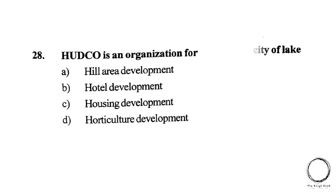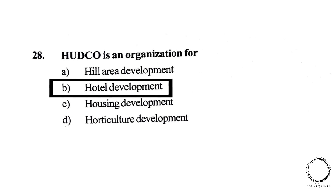Next, HUDCO is an organisation for A. Hill Area Development, B. Hotel Development, C. Housing Development, D. Horticulture Development. The right answer is C, Housing Development.